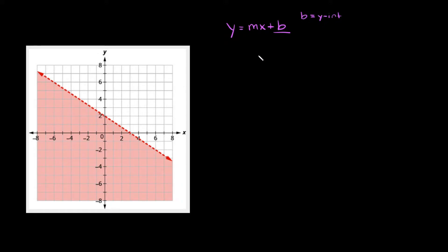The y-intercept is just where the equation of the line crosses the y-axis. You can see it crosses the y-axis right here at positive two. So our y-intercept is positive two.